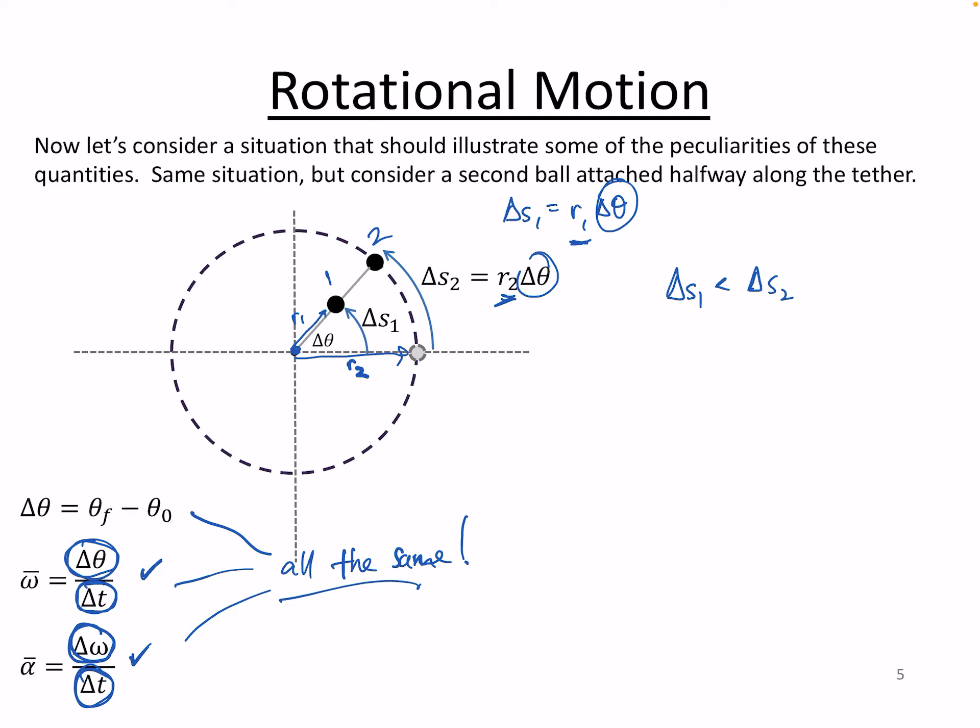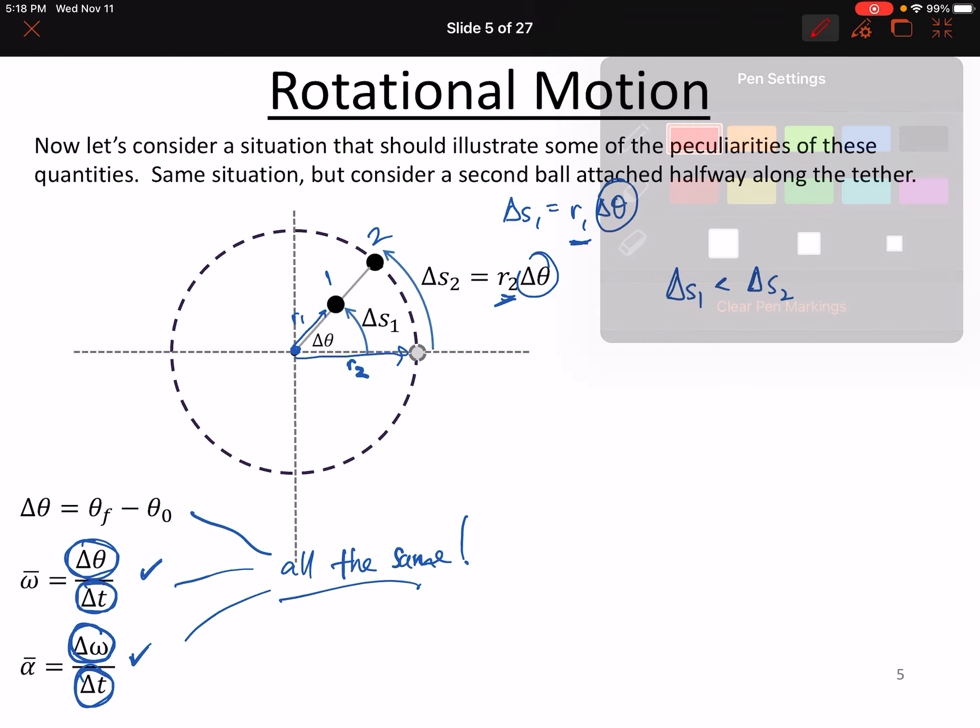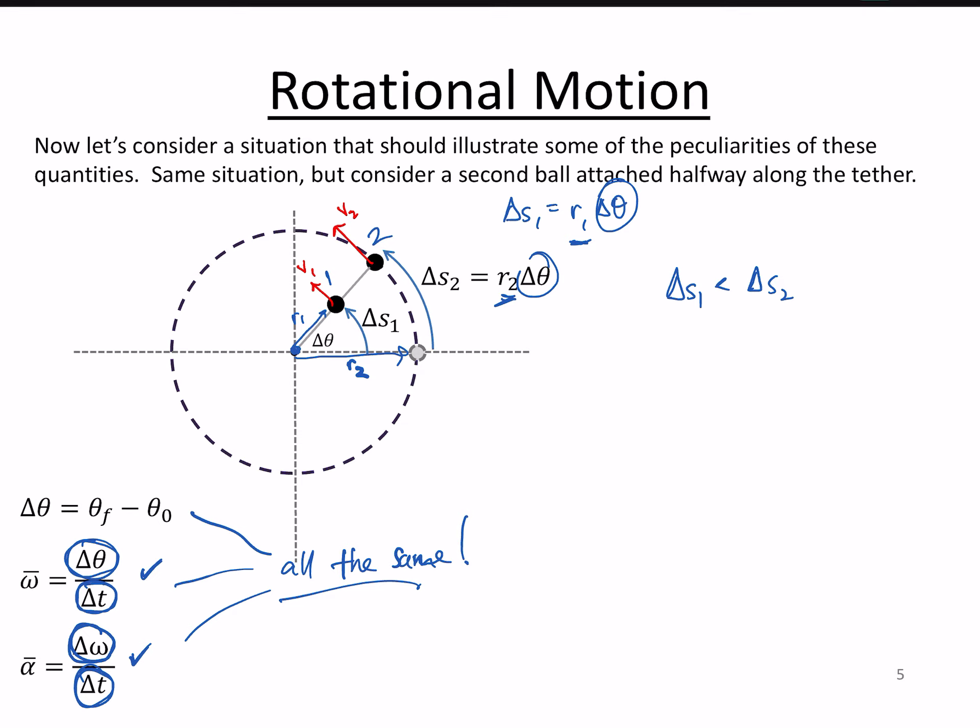Even though the linear quantities corresponding to them, for example, the linear velocity of ball number one is going to be significantly smaller than the linear velocity of ball number two. Because you're simply covering less ground in the same amount of time, or covering less distance in the same amount of time. And yet the angular quantities are quite different. That's an important thing to remember.